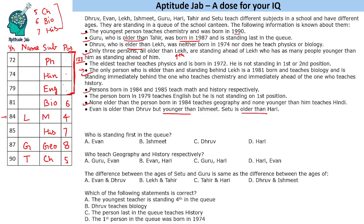Dhruv is elder than Lake, so he's among the top three. He was neither born in 1974, nor does he teach physics or biology, so Dhruv cannot be those entries — by elimination, Dhruv is the remaining person in the top three. The eldest teacher teaches physics and was born in 1972; he is not standing first or second, so he must be in third position.